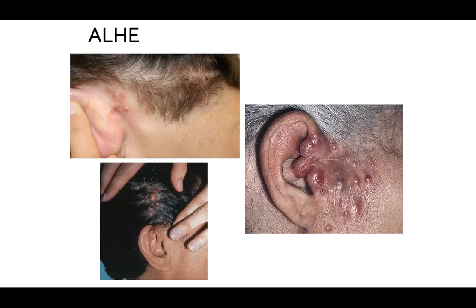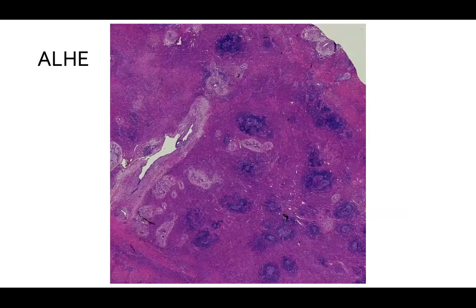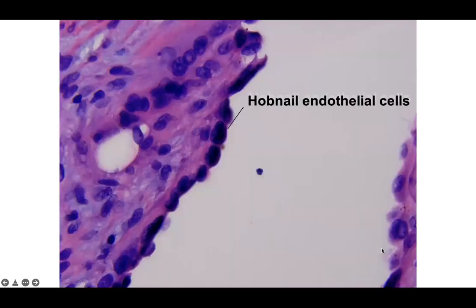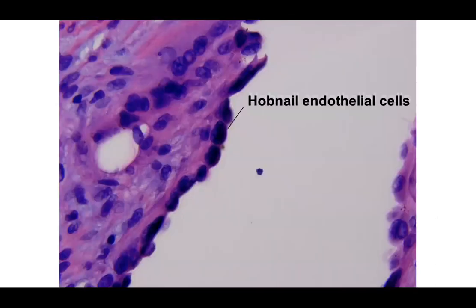Key histopathology features of angiolymphoid hyperplasia with eosinophilia include central thick-walled vessels with hobnail endothelium, peripheral proliferation of smaller vessels, and nodular lymphoid aggregates with eosinophils. At low power it can look almost like a lymph node due to the density of lymphoid aggregates. On higher power you'll notice many eosinophils within the lesion along with the hobnailed endothelial cells. Hobnail endothelial cells can be seen in multiple entities, so you should look at low power for lymphoid aggregates and diffuse eosinophils before diagnosing angiolymphoid hyperplasia with eosinophilia.